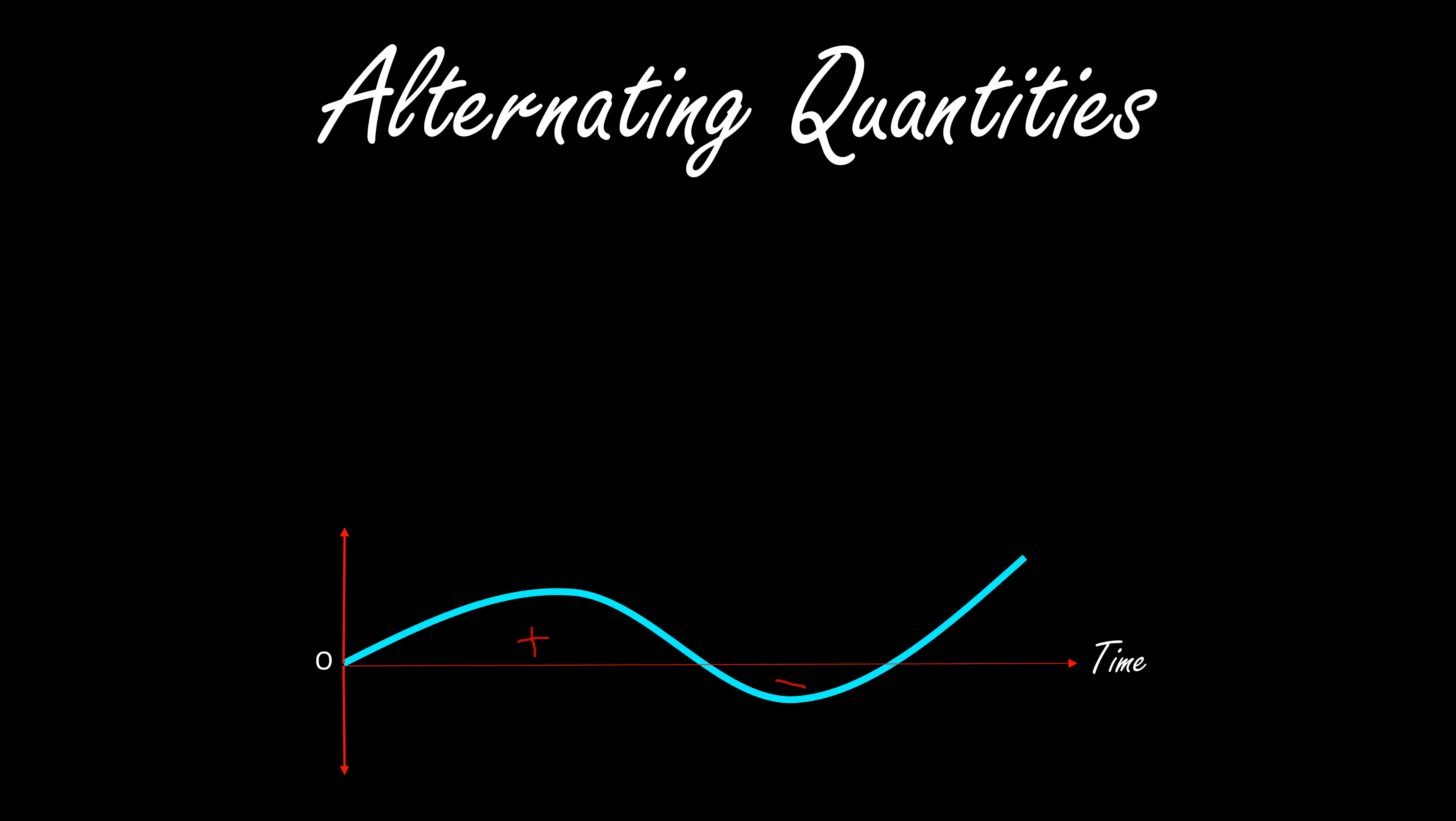Such type of sinusoidal waveforms are called unsymmetrical sinusoidal waveforms. If the positive and negative alterations are identical with each other, then it is called symmetrical sinusoidal waveforms.